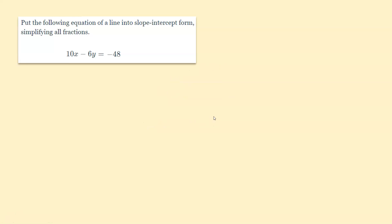So let's go ahead and look at this first example problem. Put the following equation of a line into slope-intercept form, simplifying all fractions. In order to do that, remember our slope-intercept form is y equals mx plus b. So the key step is getting y by itself on one side of the equation.